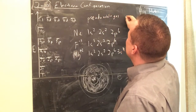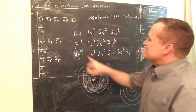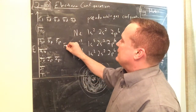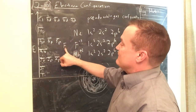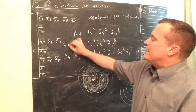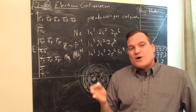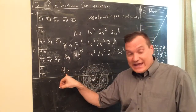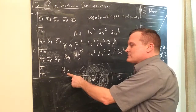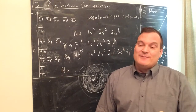A pseudo noble gas electron configuration means the species is matching a noble gas configuration without being one. Fluoride F⁻¹ is not a noble gas but matches neon's configuration. Once fluorine changes to fluoride and magnesium changes to Mg²⁺, they're stable — safe. Sodium metal, Na, is extremely dangerous: it reacts with oxygen or moisture in the air and can explode.